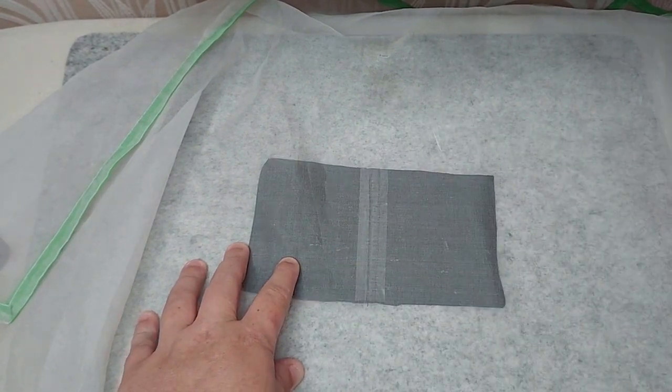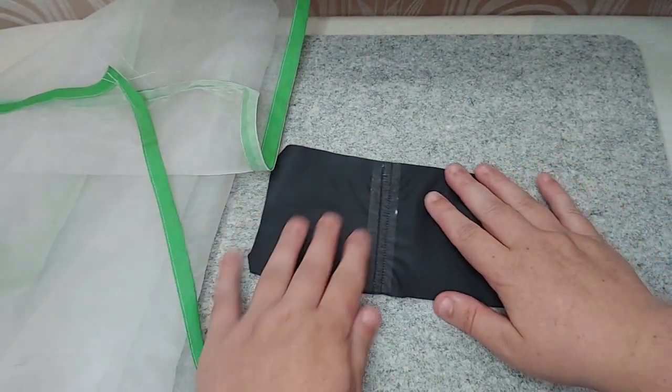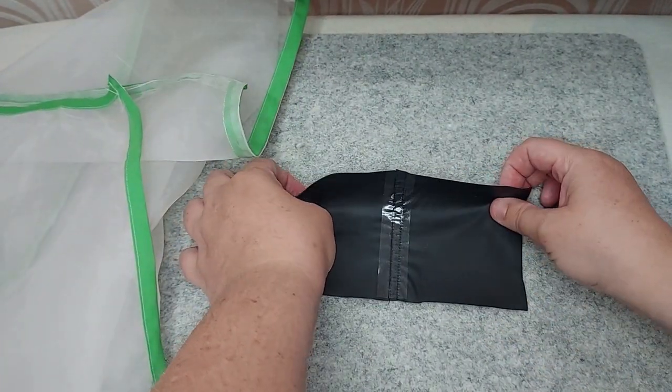If you're working around curved seams such as circles or a crotch line, it will be useful to work with small pieces of tape and overlap them slightly.